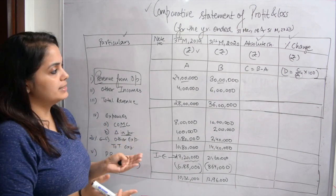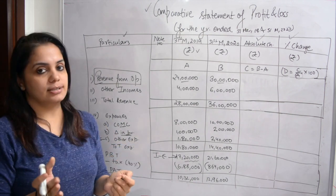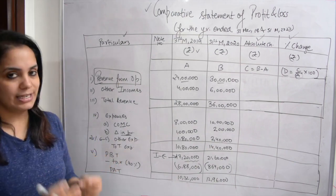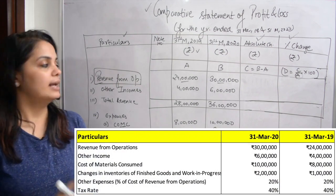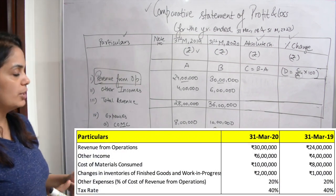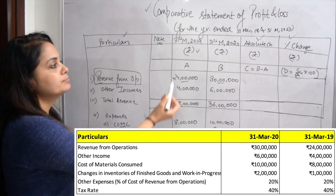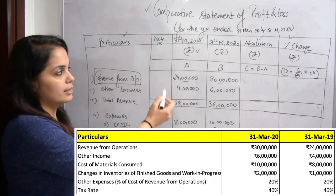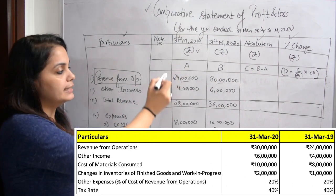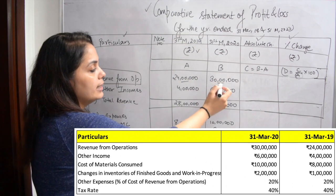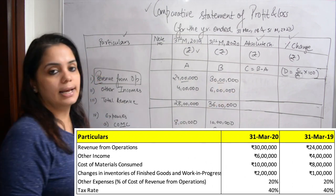Now let's start with the question. If you have seen the question on the screen, the revenue from operations has been given 24 lakhs in the previous year 2019, and 2020 has been given 30 lakhs.